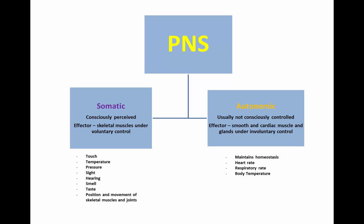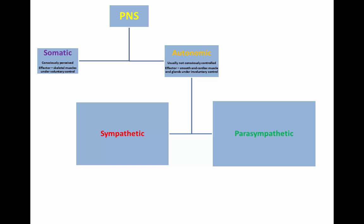The main function of this system is to maintain homeostatic conditions in the body, as well as regulating heart rate, respiratory rate, and body temperature. The two principal divisions of the autonomic nervous system are the sympathetic and the parasympathetic.